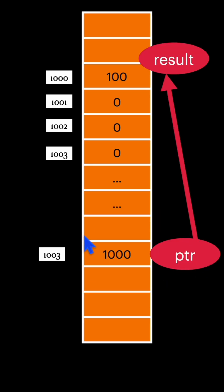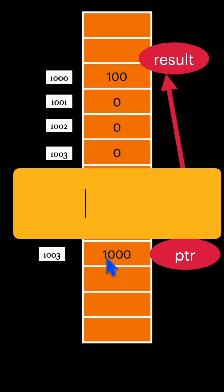Suppose you have taken an integer pointer which is pointing to this variable result. Just recall what happens when you increment this pointer by one.